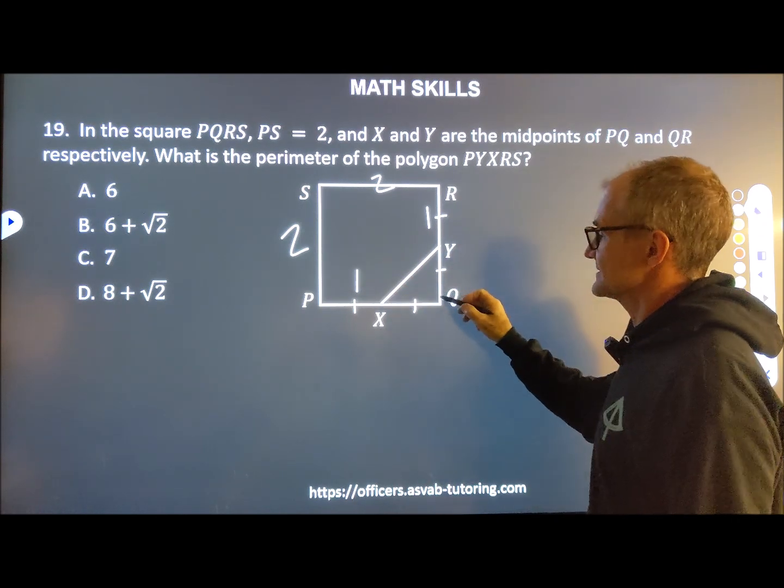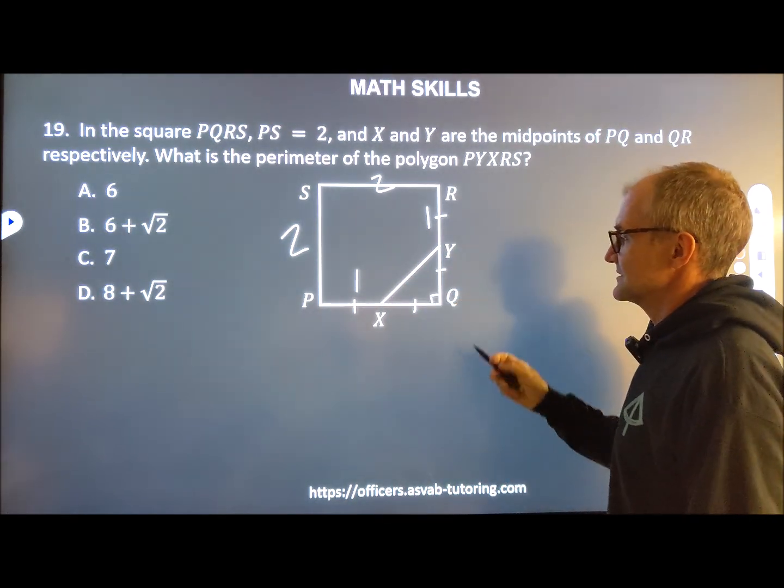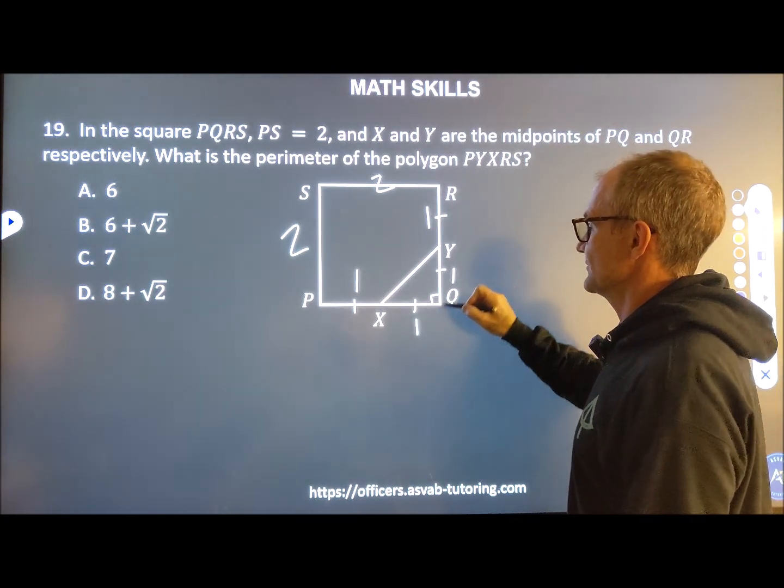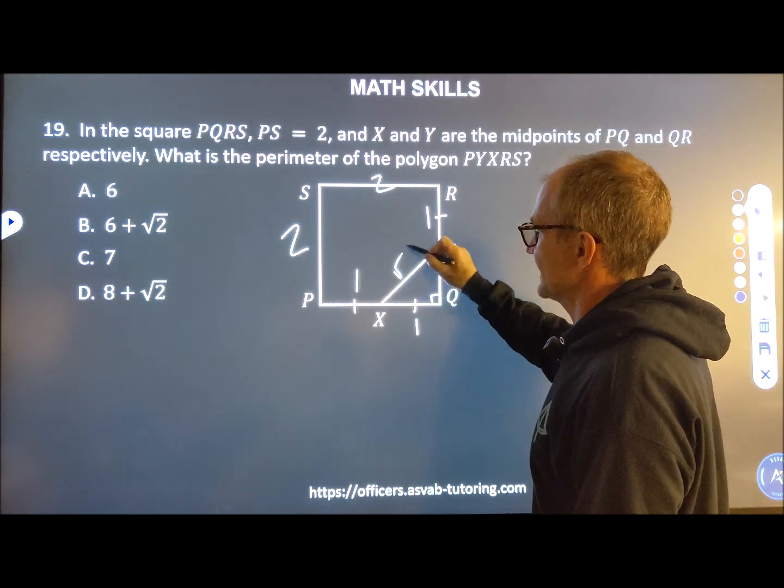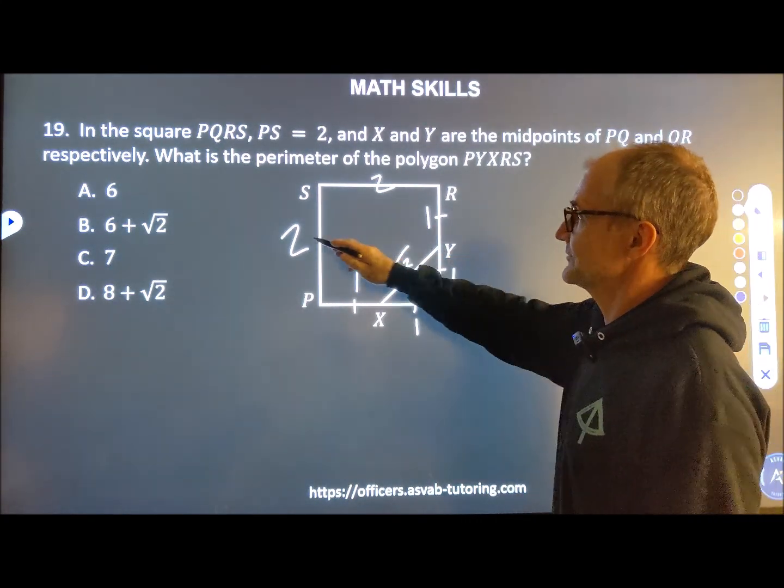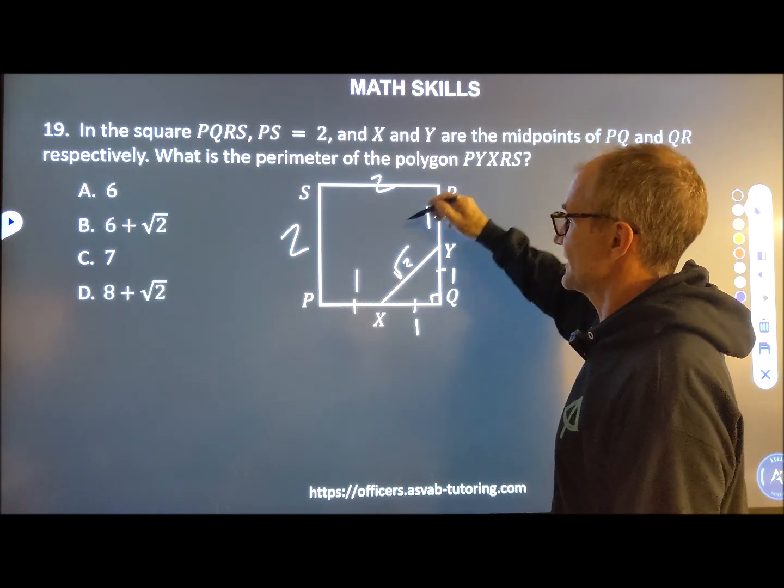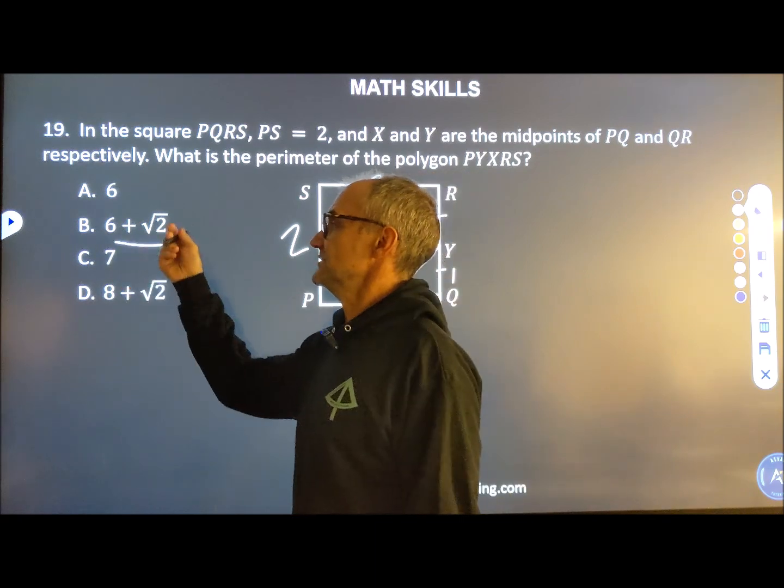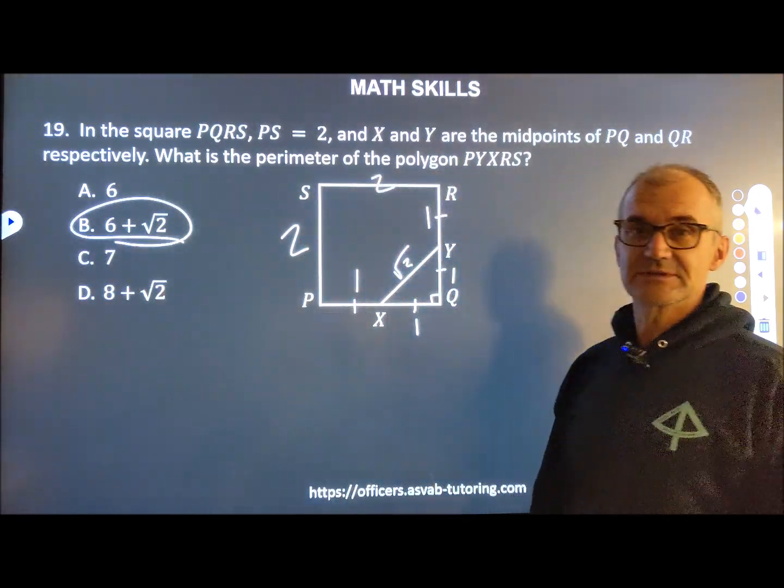And then this is an isosceles right triangle. So I have that this is 1, this is 1. And then I have 1² plus 1² is 2. Square root of that gives me √2. So the total perimeter of that shape is 2, 4, 5, 6 plus that √2. 6 plus √2. There's my answer. Answer B right there.